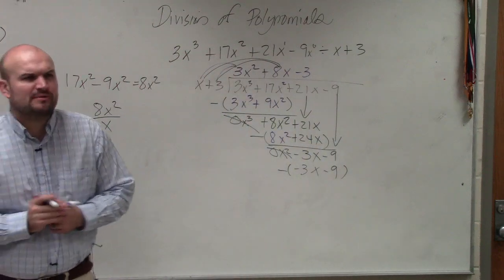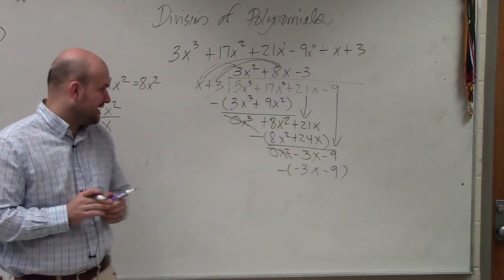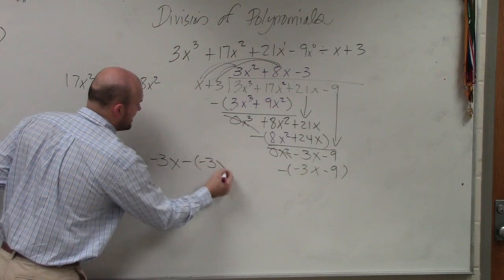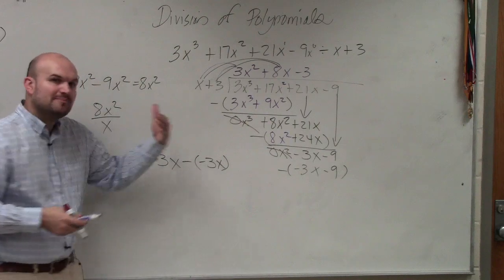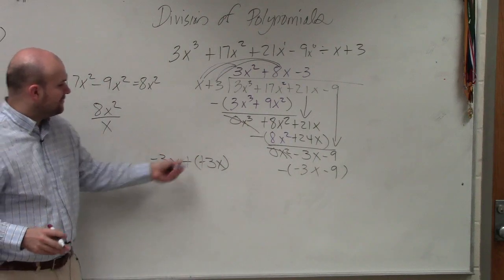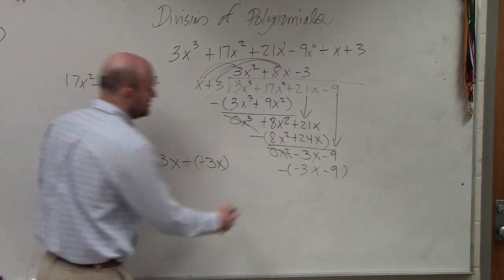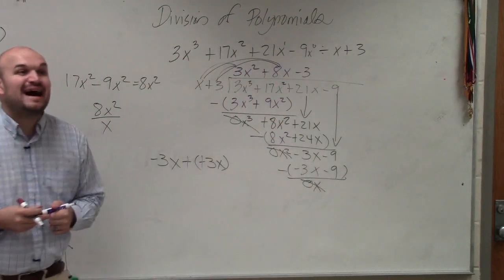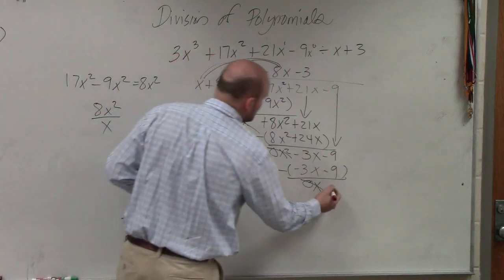This is usually where people get mistakes, is when you have these double negatives. Negative 3x minus a negative 3x. Guys, remember, when you're minusing the negative, that's the same as addition. Negative 3x plus 3x is again 0x. And negative 9 minus a negative 9 is 0.